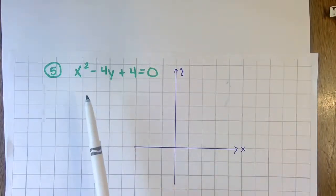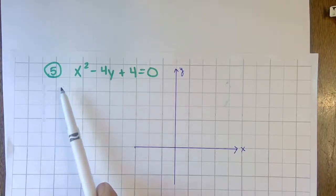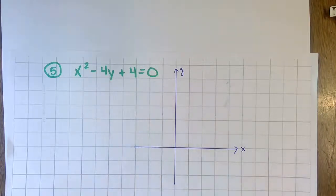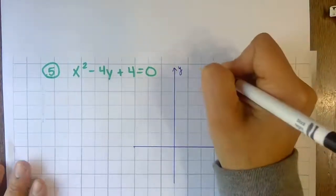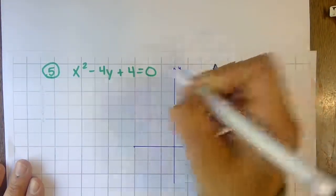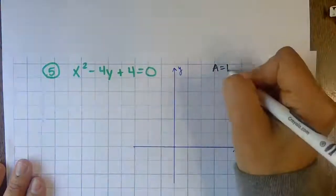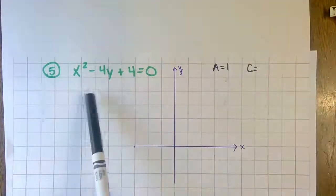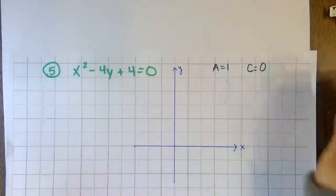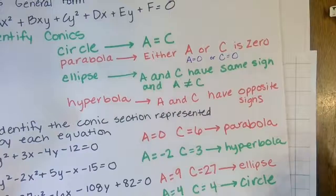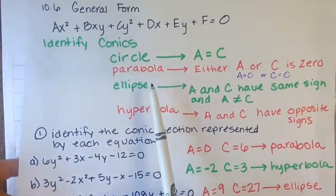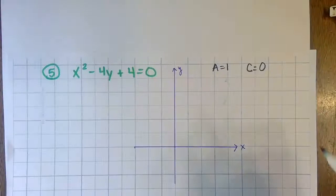Last problem: identify the conic section, rewrite in standard form, and graph. A value is the number in front of x² — that's one. There is no y² term, so C is zero. Since one of them is zero, this is a parabola.